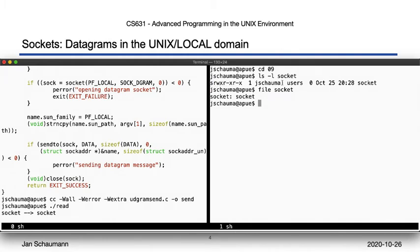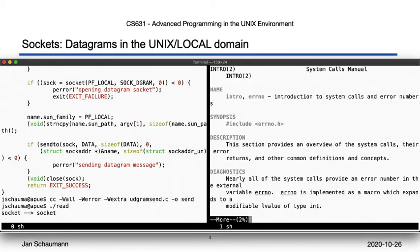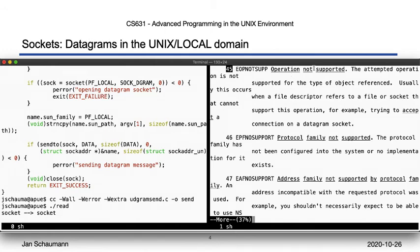This looks similar to our FIFO we used previously, so perhaps we can just try to write data into the socket. Nope, not going to work. Unfortunately, a shell doesn't use strerror, so all we get is the numeric error code. Let's look up what error 45 is — operation not supported for the type of object. So we can't just write to the socket, but let's use our send program.